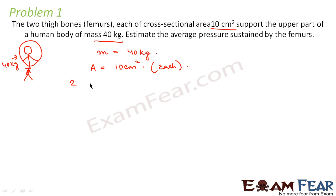Therefore, for two femurs, femur is nothing but a name for the thigh bone, the area would be equal to 2 into 10 cm². That is equal to 2 into 10 into 10 to the power minus 4 meter square. We have converted centimeter square to meter square. So this will be equal to 20 into 10 to the power minus 4 meter square.